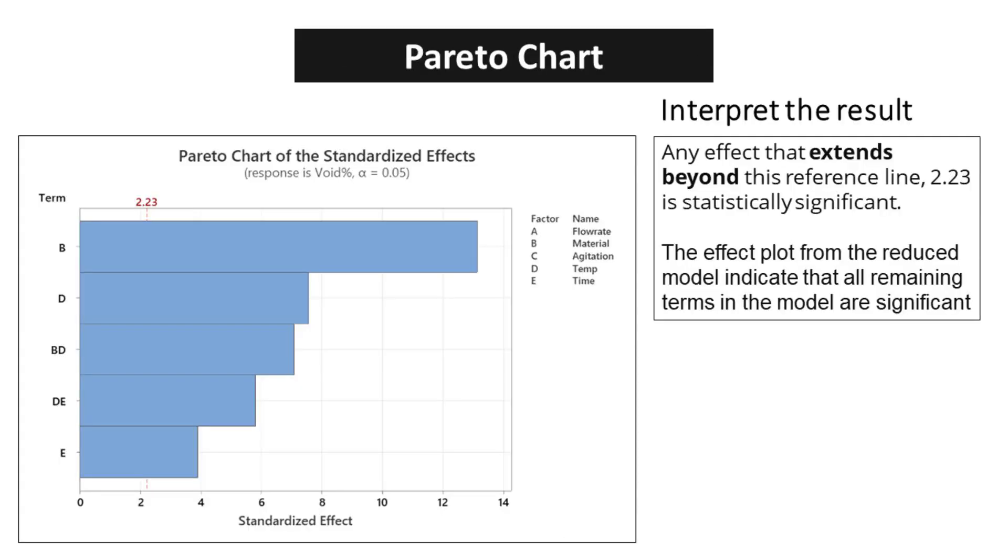Any effect that extends beyond this reference line, 2.23, is statistically significant. The effect plot from the reduced model indicates that all remaining terms in the model are significant.